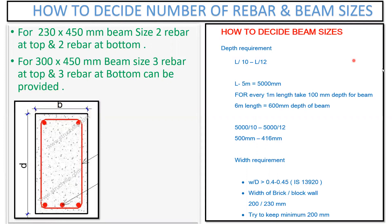Now how to decide the number of rebars in the beam. The usual practice is: for a 230 by 450 mm beam size, two rebars at the top and two rebars at the bottom is sufficient. That is a very simple thumb rule. If you have a size of a beam of 230 mm, you can give two rebars.